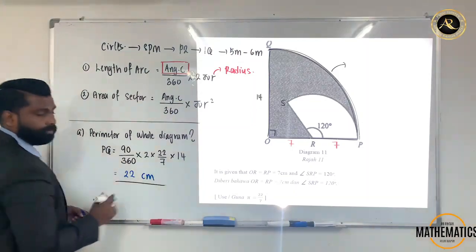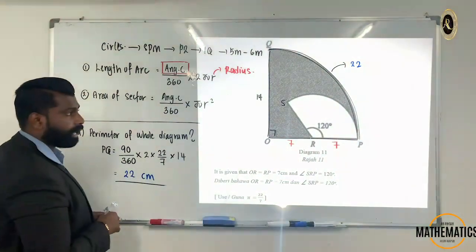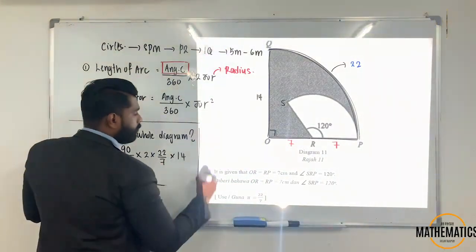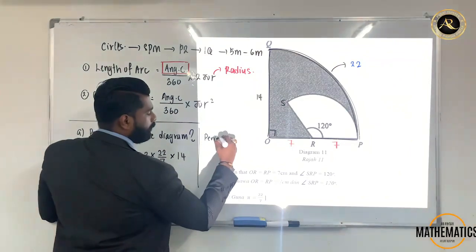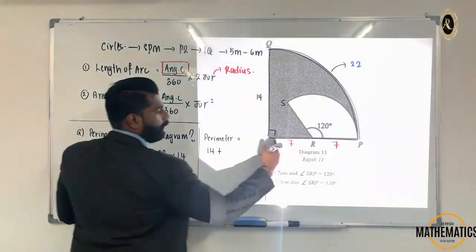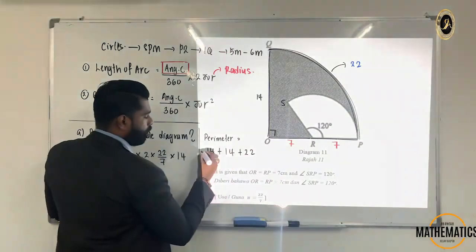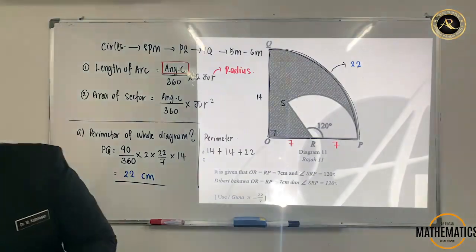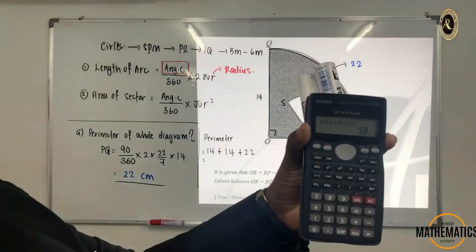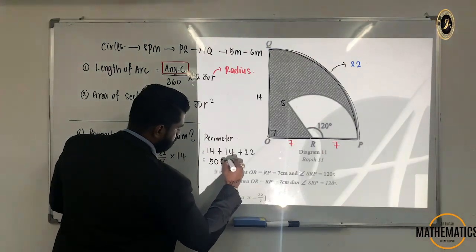Now I already know arc QP is 22 cm. The question asks for perimeter. So: perimeter equals 14 (radius OP) plus 7 plus 7 (which is 14, for OR and RP) plus 22 (arc QP). So 14 + 14 + 22 = 50. My answer for perimeter is 50 cm.